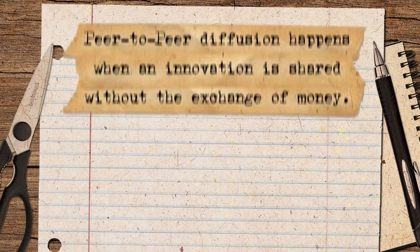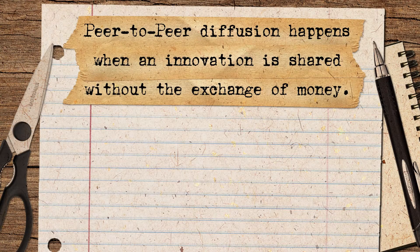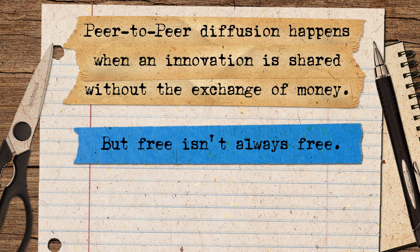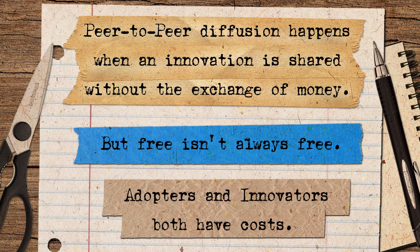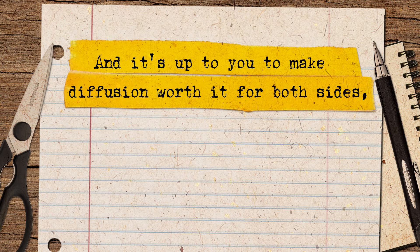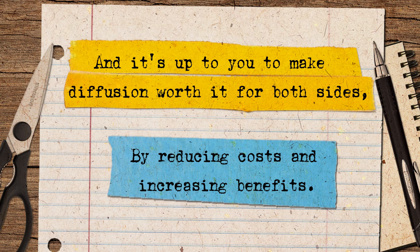So, what did we learn here today? Peer-to-peer diffusion happens when an innovation is shared without the exchange of money. But free isn't always free. Adopters and innovators both have costs. And it's up to you to make diffusion worth it for both sides by reducing costs and increasing benefits.